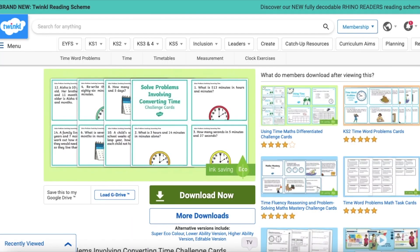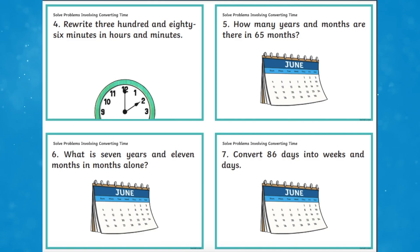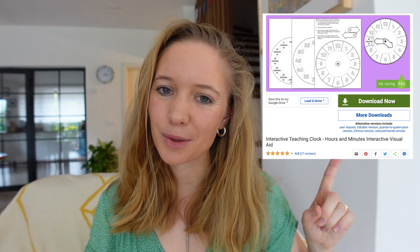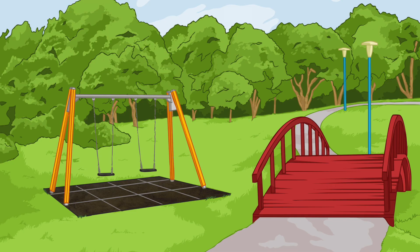Lastly, if your child's feeling really confident, why not try these converting time challenge cards to really get them thinking? If your child is still struggling to tell the time, don't worry — you might want to make this interactive clock to use as a teaching clock. And it's always good to talk to your child about time in everyday situations. For example, 'We're going to the park in 10 minutes. What time will it be then?' Try to look at both analog and digital clocks.